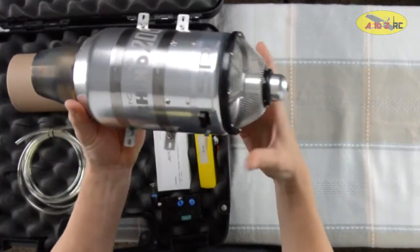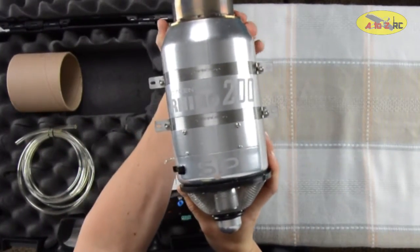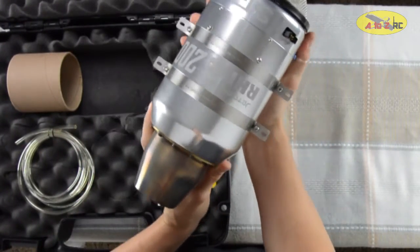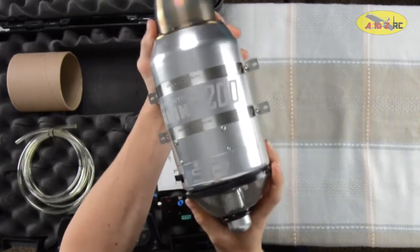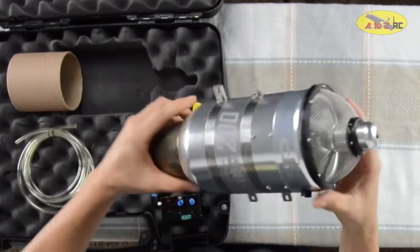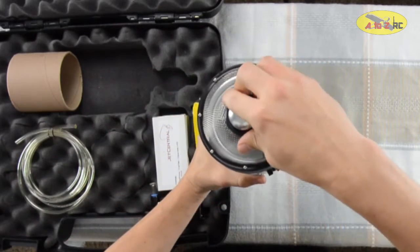Okay, and here it is, the new Jet Central Rhino 200 SP. You can see it's really light. They did a really good job with how it looks. Let's go ahead and take a closer look.